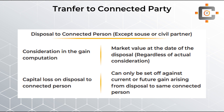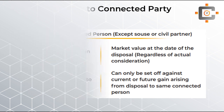That gain amount will be taxed normally. But if you have done a transaction with a connected person using market value as proceeds and instead of a gain you incurred a loss, then that particular loss can only be set off against current or future gains arising from disposals to the same connected person. So there are two tax treatments to remember for connected person transactions.